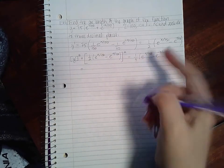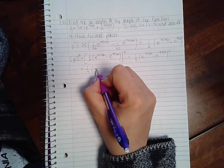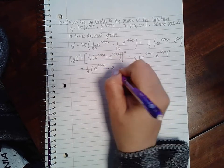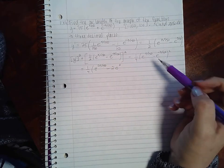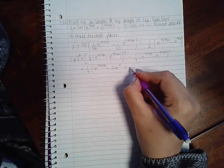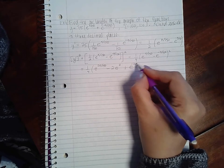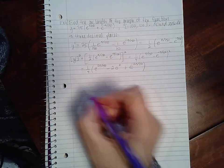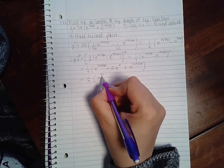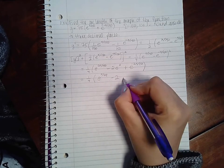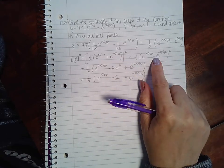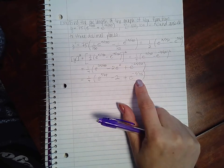And if I distribute that all out I get e to the 2x over 150 minus 2 times e to the 0, because x over 150 plus negative x over 150 is 0, plus e to the negative 2x over 150. Which simplifies into e to the x over 75 minus 2 plus e to the negative x over 75. So notice that when I square this with a negative, this is what I end up with.